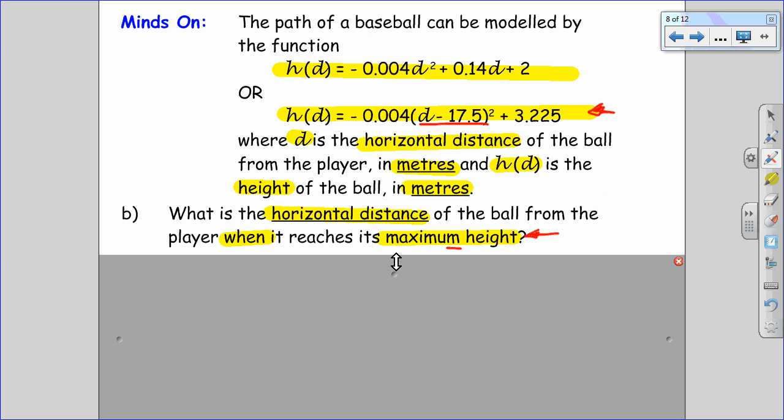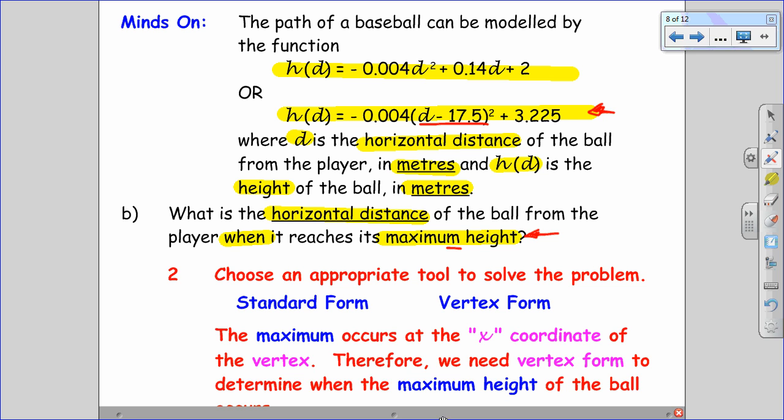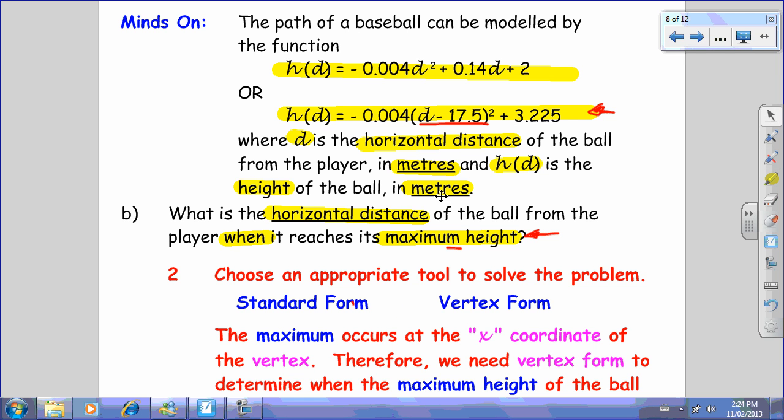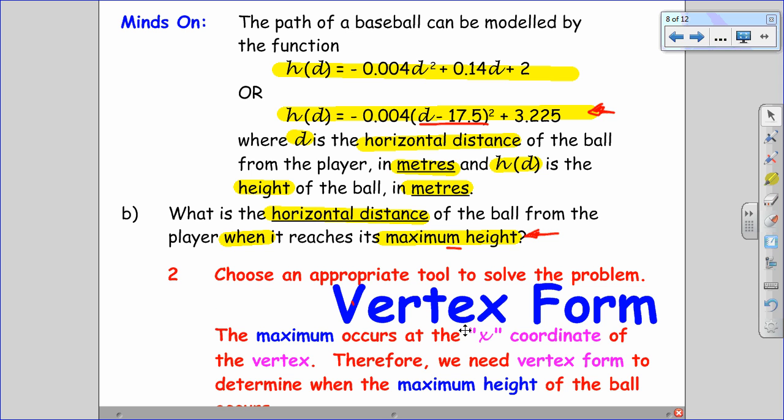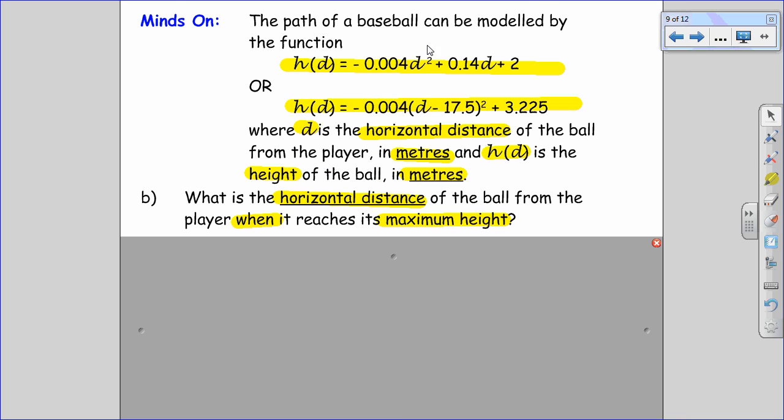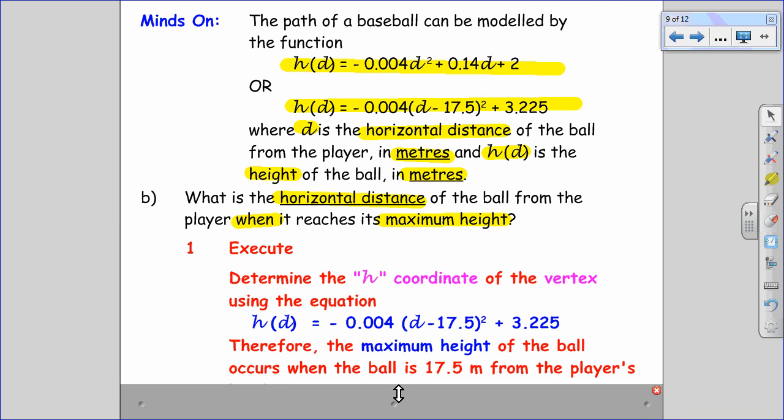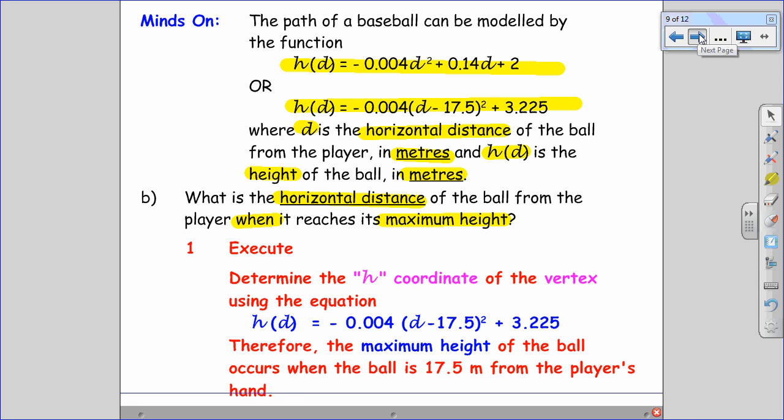And again, I've now figured out what to use. I've chosen my tool. I don't think it's standard form, so let's just see what happens here. I do think I'm using my vertex form, and I was correct. And I can then use that equation. And I know that the ball is 17.5 meters away from the player.